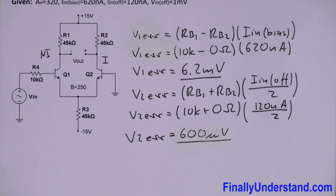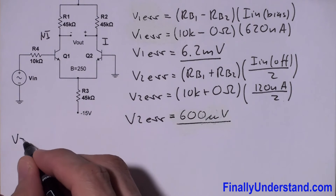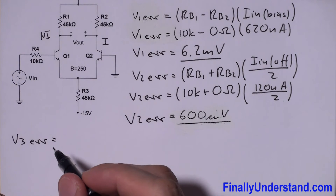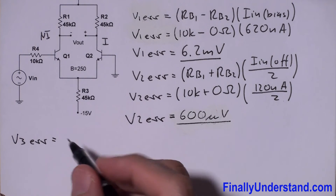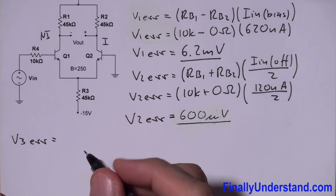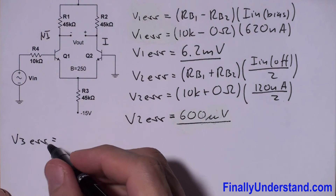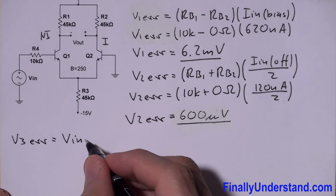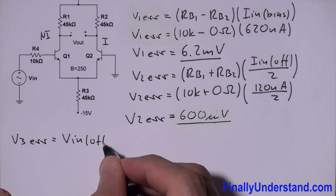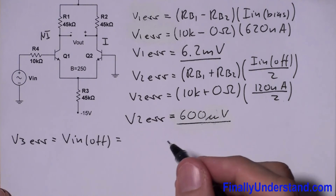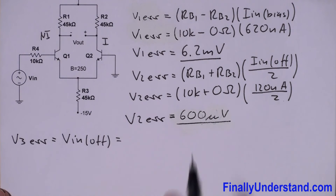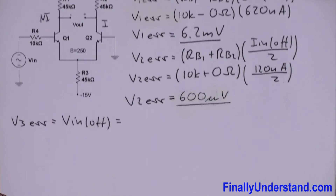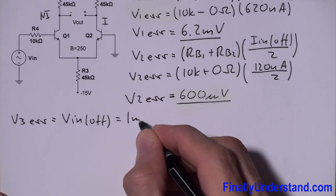Next, I need to find V3_error — the input error voltage due to the input offset voltage. The formula is simply V3_error = Vin_offset, which in our case equals 1 mV.